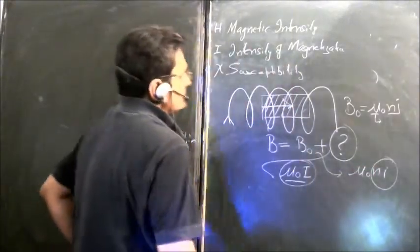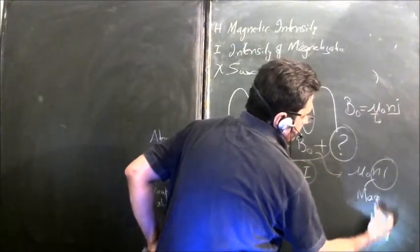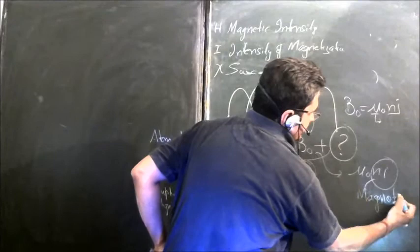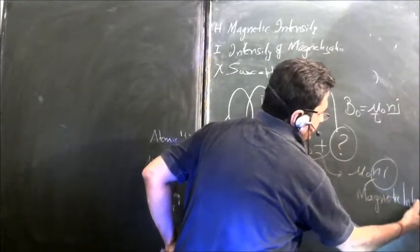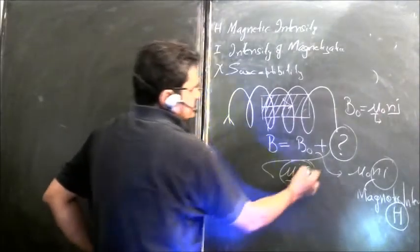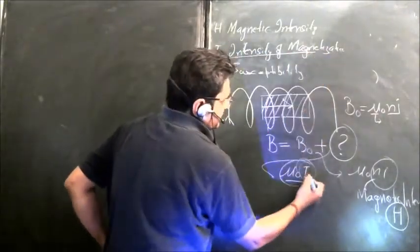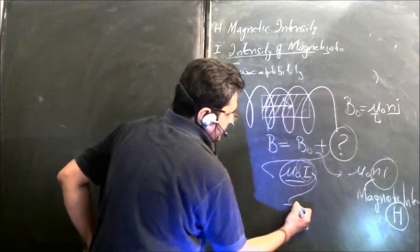So please don't get confused. Intensity of magnetization is I, and H is magnetic intensity.